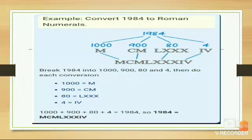Example: convert 1984 to Roman numerals. Here is the number. First of all, you have to break the numbers into 1000, 900, 80, and 4. Then do each conversion.